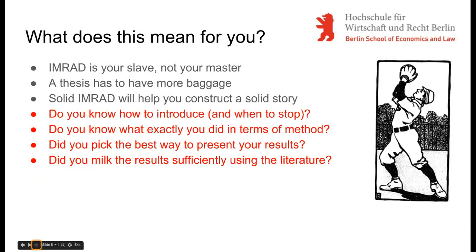What does all this mean for your thesis? First off, IMRAD is your slave and not your master. This scheme is supposed to help you identify weaknesses and position the different parts of your thinking and your work in the best possible light — this is why IMRAD has become a quasi-standard in the first place. A thesis has to have a lot more baggage than a scientific paper: you need a list of references satisfying certain rules including proper standardized citation, and you need a section to conclude. In these conclusions, you only reiterate your most important findings. Having a solid grasp on the IMRAD structure will help you construct a solid story around your research, and a solid story is what any supervisor and any reader will be looking for.